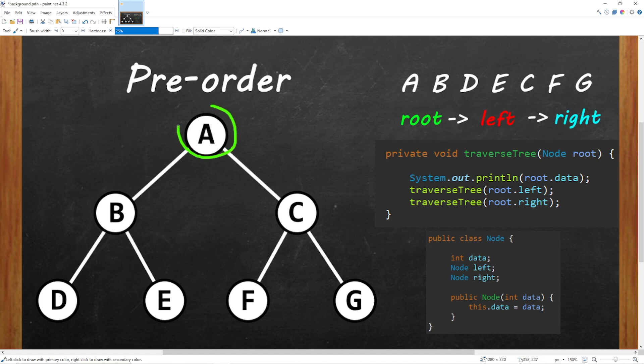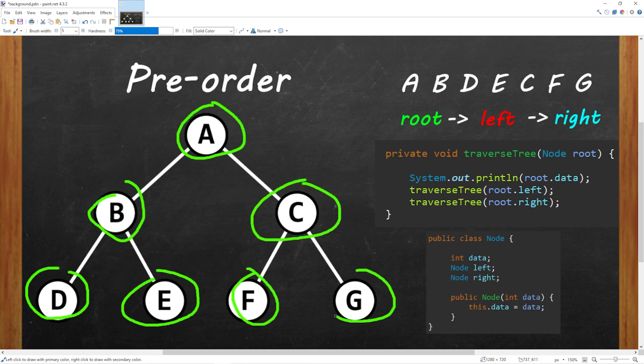So we will mark A as visited, our entry point, then visit the left child, and we will continue to go left, then go right. So we can't go left anymore, we're going to go right, mark the root as visited, then left, then right.